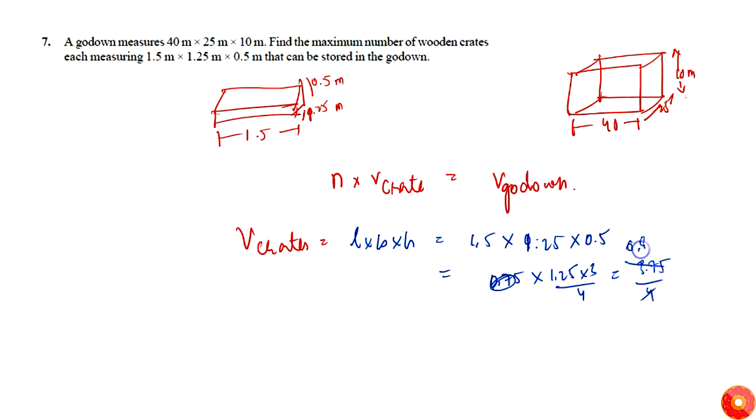This will be 0.94 nearly, or I can simply say 0.9375 cubic meters. Or I can just simply rewrite it as 1.5 into 1.25 into 0.5 meter cube, because later on calculations will become easy.